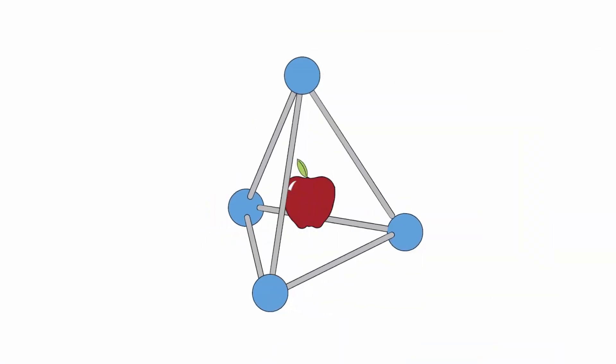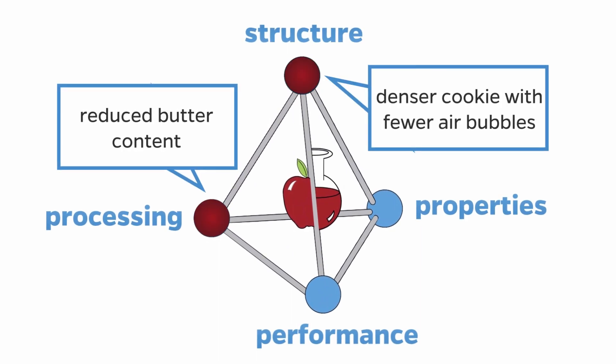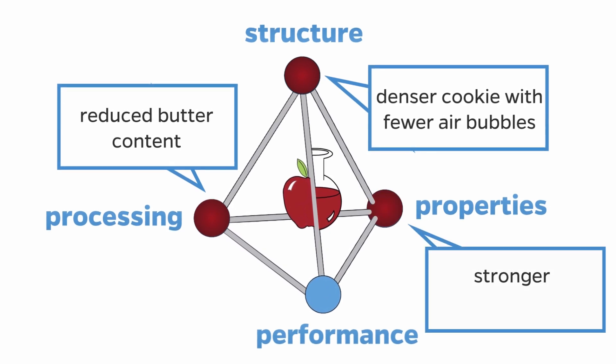So now that we've characterized the cookies, let's return to our original prediction. The low butter recipe produced denser cookies with fewer air bubbles, and we learned from Seamus that these cookies were stronger because they could withstand more stress before breaking. However, they're not as ductile as the original tastier recipe. Since our original problem was that our cookies weren't strong enough, let's stick with this lower butter recipe. Sounds great! Let's get our friends together and try to make a gingerbread house with the new recipe.